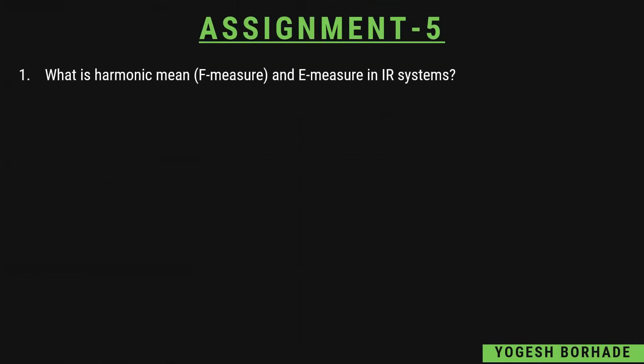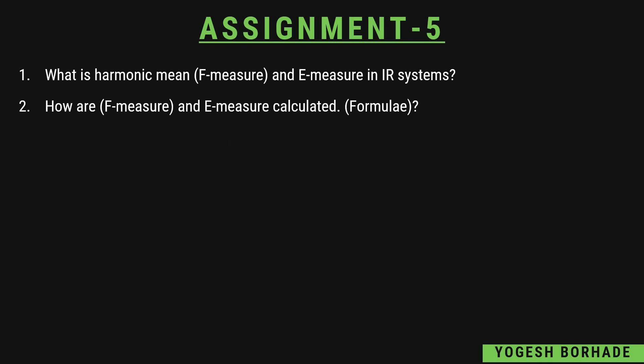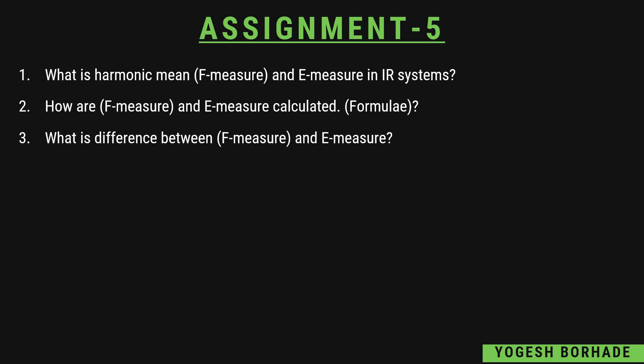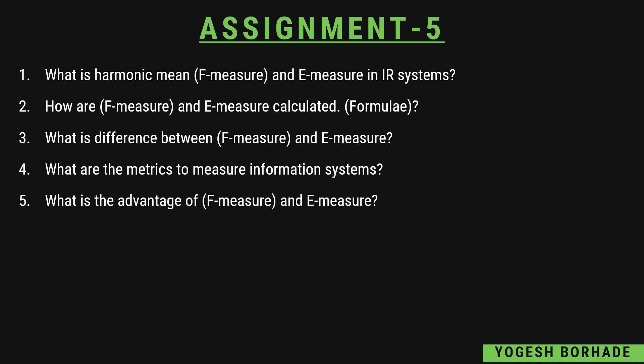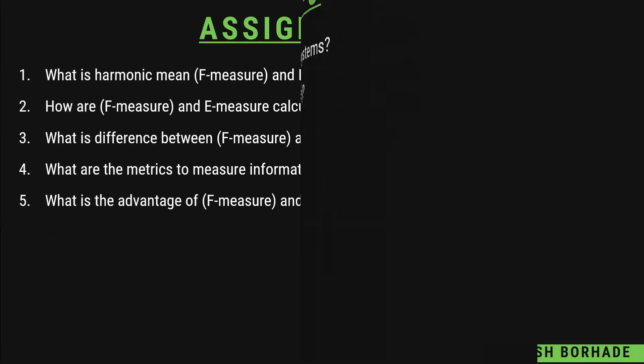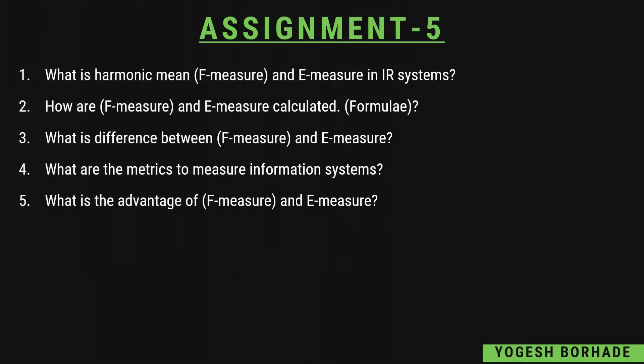Assignment five covers the harmonic mean. Prepare what are F-measure and E-measure, and the F-score which is similar to F-measure. Also prepare how F-measure and E-measure are calculated and their formulas. The difference between F-measure and E-measure covers multiple questions at once — if you have prepared that difference, you can answer what each measure is and how they are calculated. Then prepare what are the metrics to measure information systems and what are the advantages of F-measure and E-measure.